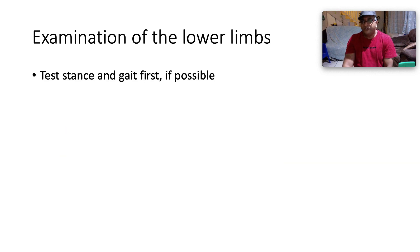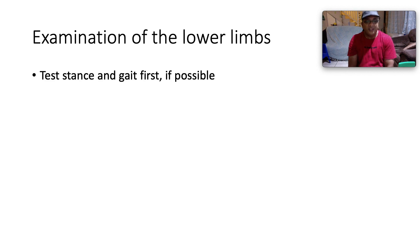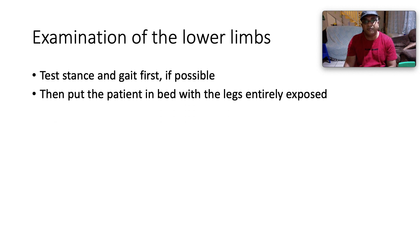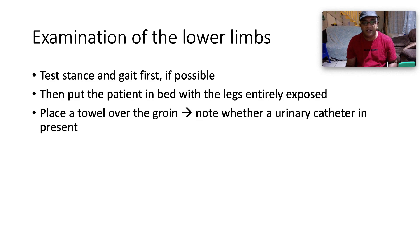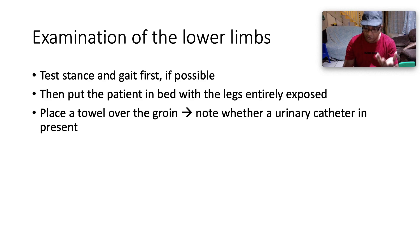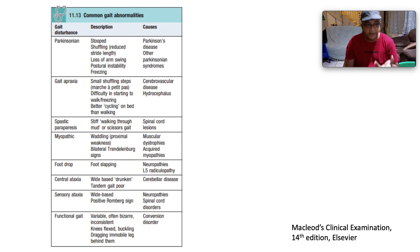Shifting to examination of the lower limbs: first test stance and gait if possible, then put the patient in bed with legs entirely exposed and a towel over the groin. Note whether a urinary catheter is present, which may indicate incontinence — an important clinical clue.